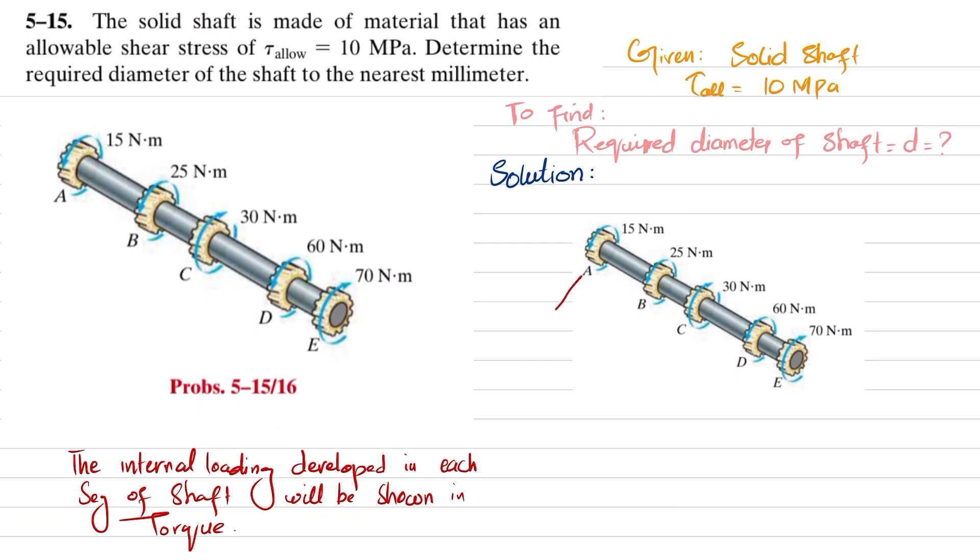I am going to draw this torque diagram. I have taken two lines and a line here that shows the entire length. At point A you can see a torque of 15, so let this be torque 15. That is clockwise, so we will take it downward. Moving from A to B we have the same torque.